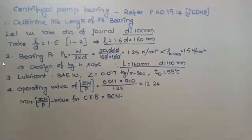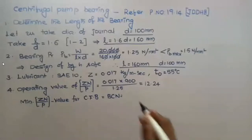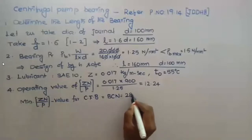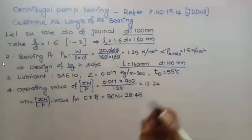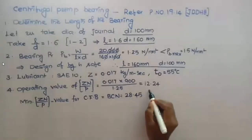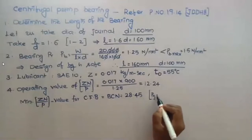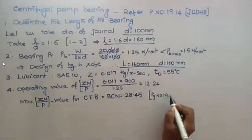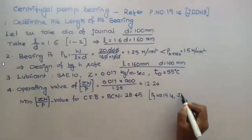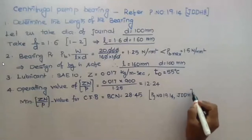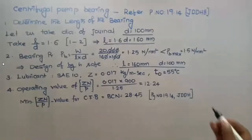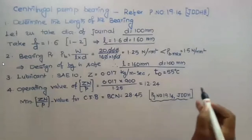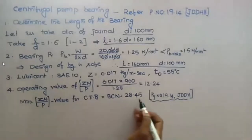From the data book at page number 19.14 of journal bearing design data, the minimum value of ZN/P is given. The bearing characteristic number at minimum is equal to 28.45.